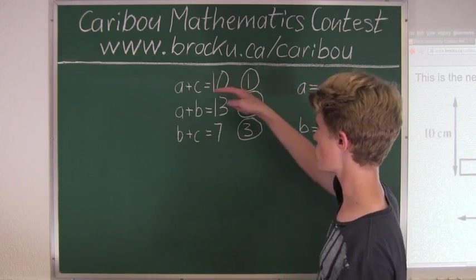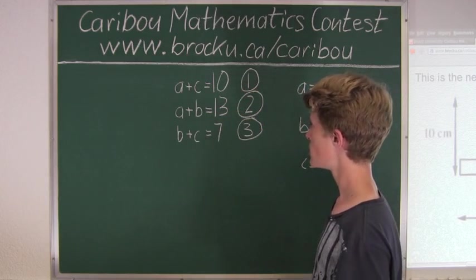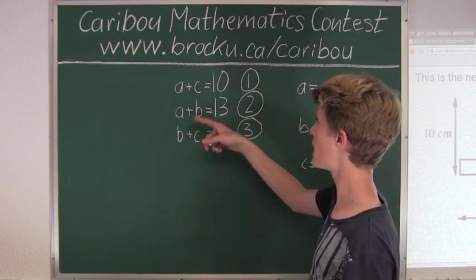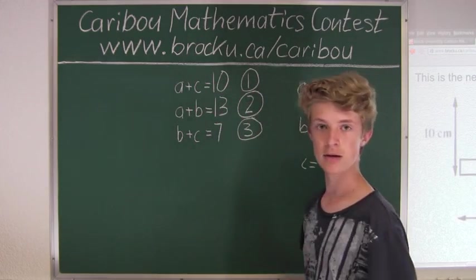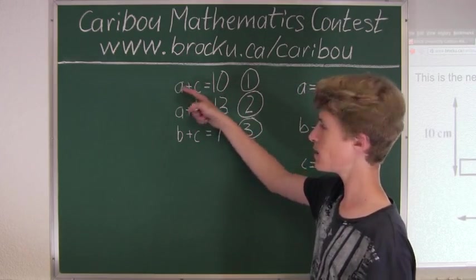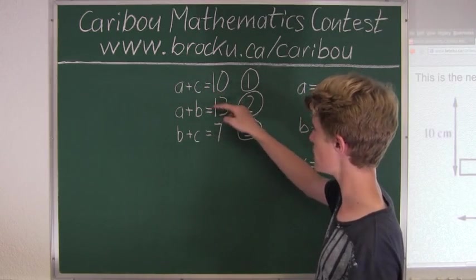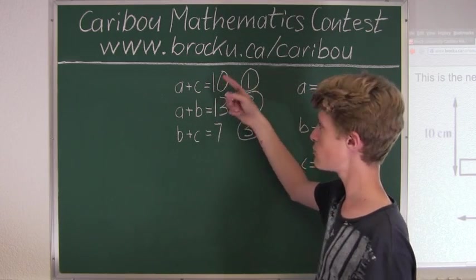Let's look at equations 1 and 2. Now we will do equation 2 minus equation 1. We will have A minus A, which is 0, and then we will have B minus C, and that equals 13 minus 10, which is 3.